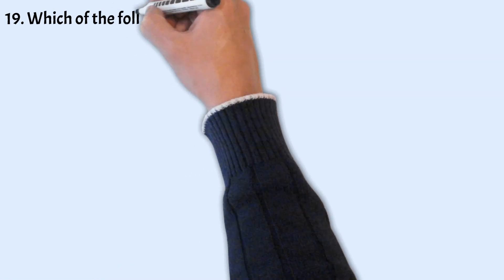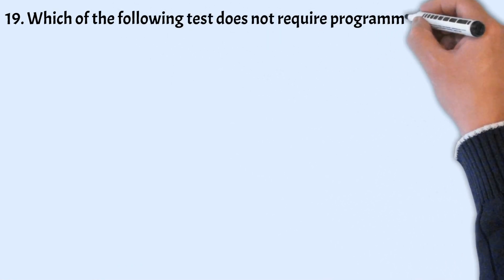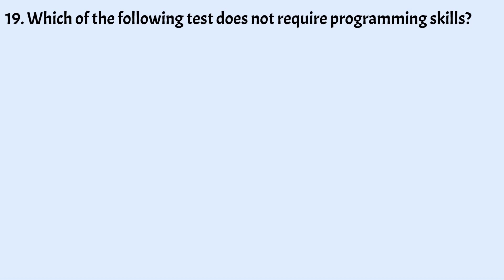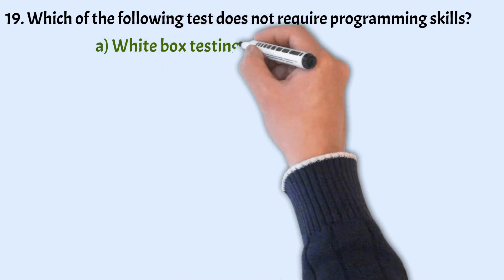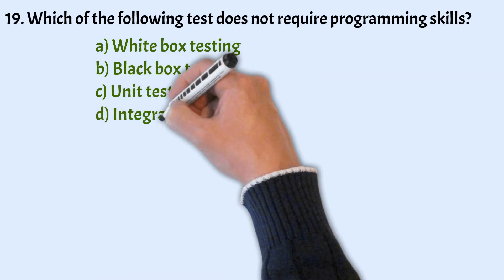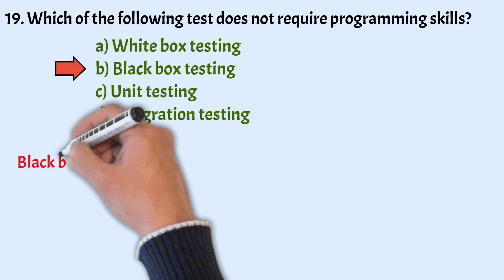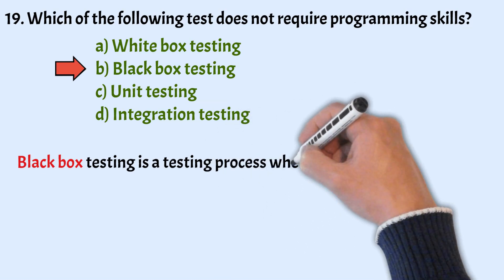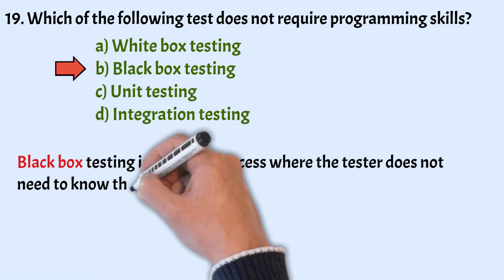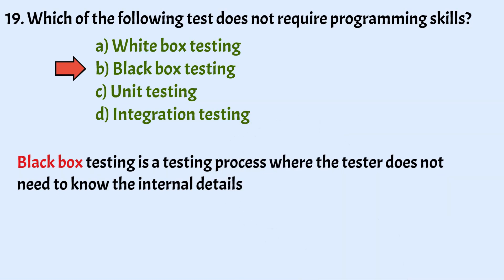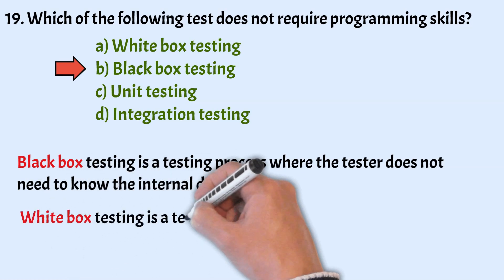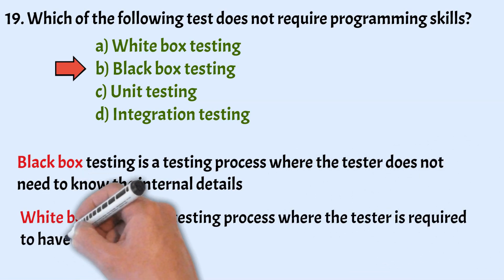Next: Which of the following tests doesn't require programming skills? Options: White Box Testing, Black Box Testing, Unit Testing, and Integration Testing. The correct option is Option B, Black Box Testing. Black Box Testing is a testing process where the tester doesn't need to know the internal details or code of the software — they simply supply inputs and check the output. White Box Testing, in contrast, requires good programming skills.